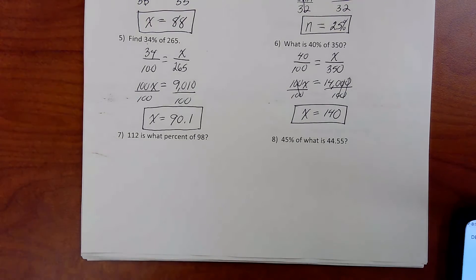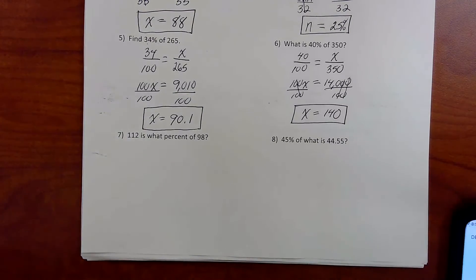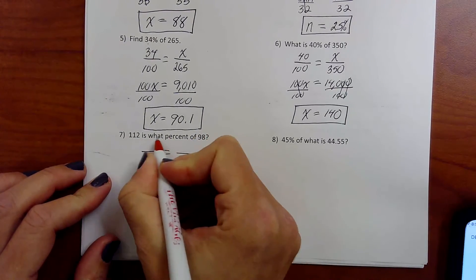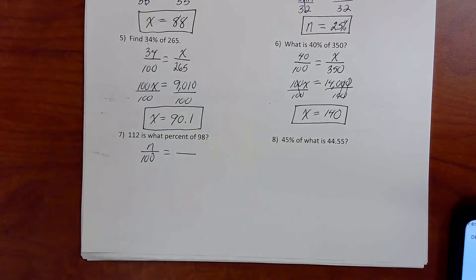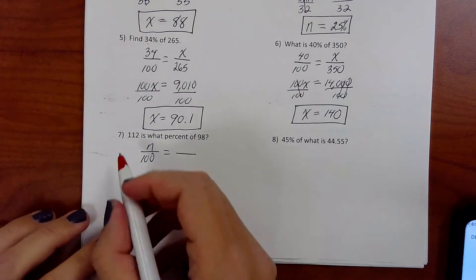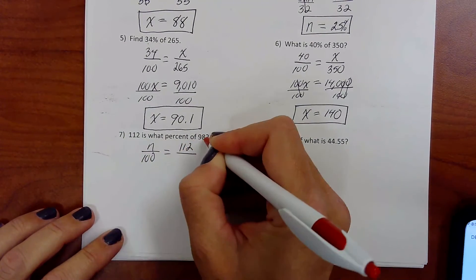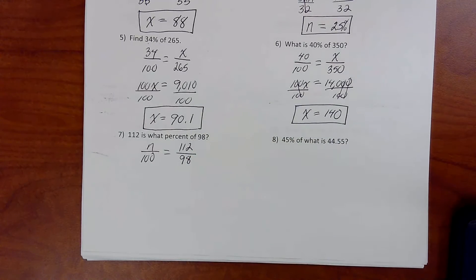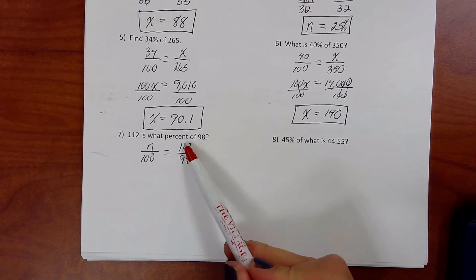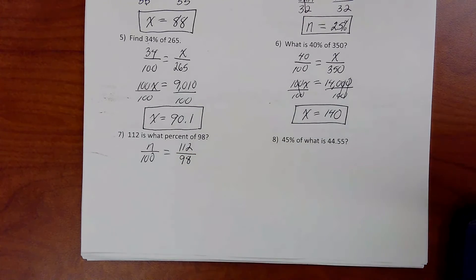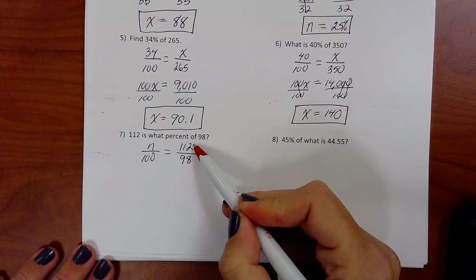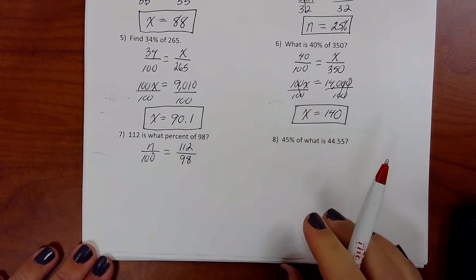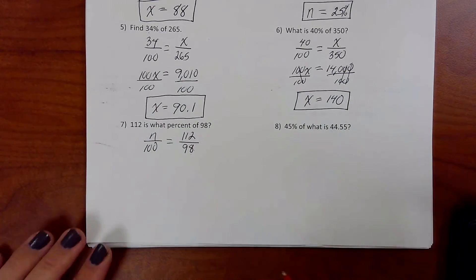Let's see. Number seven. 112 is what percent of 98? We don't know the percent. So n over 100. And is over of. 112 is with the is. 98. I don't know if you can tell this, but I can already tell my answer is going to be over 100%. Because remember how it's part over total? Look, the part is bigger than the total. So our percent better be bigger than 100. Let's see if it happens.